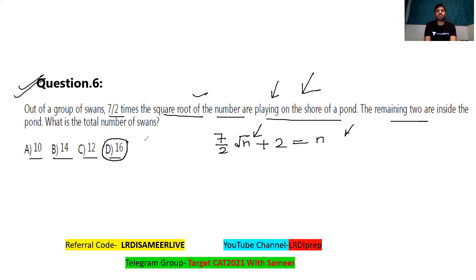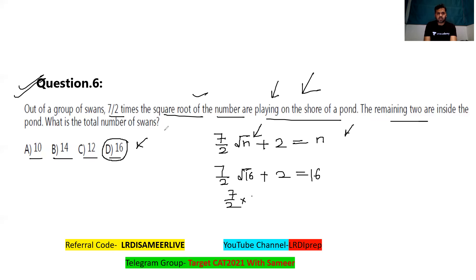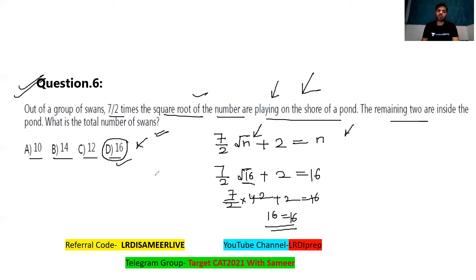The best option to check is option D. If the total number of swans is 16: root 16 is 4, then (7/2) × 4 + 2 = 14 + 2 = 16. So 16 equals 16 — the option is satisfied. The answer must be a perfect square since we're talking about the number of swans, and only option D is a perfect square. Without even computing further, option D is the answer.